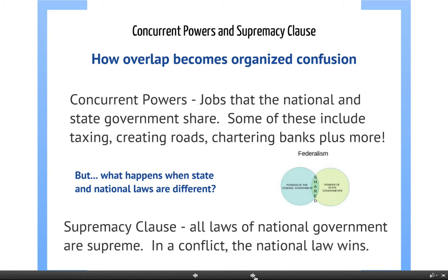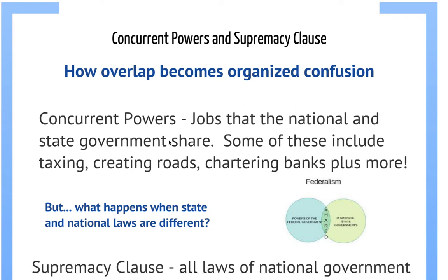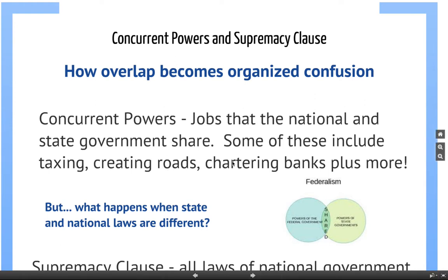A couple of things you need to know about federalism: even though the Constitution divides powers, there must be some overlap, and you are right. This is called concurrent powers — there are some jobs that the national and state government both share. One of those jobs is taxing; the national government taxes us and the state taxes us. Both governments can also create roads and charter banks. There are many more things they can share as well.